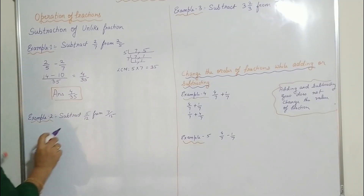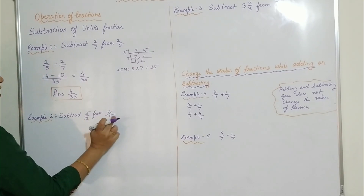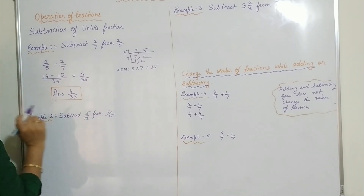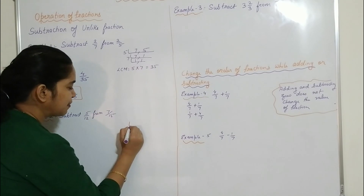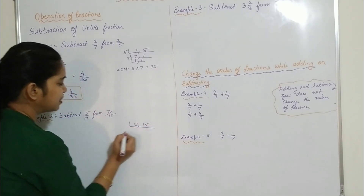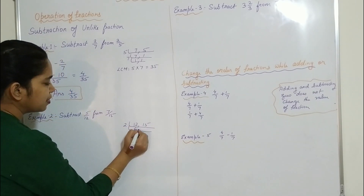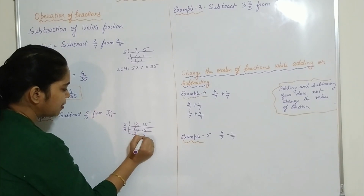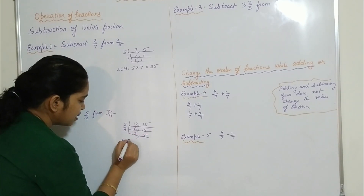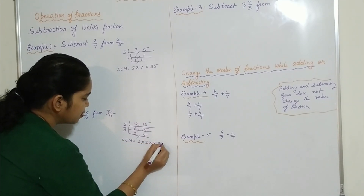Now another question — subtract 5 by 12 from 7 by 15. Here 7 by 15 is the larger fraction. We will again take the LCM of the two numbers, that is 12 and 15. We divide: 12 gives 2 and 6, then 3 and 2; 15 gives 5 and 15. So the LCM factors are 2 into 3 into 2 into 5.